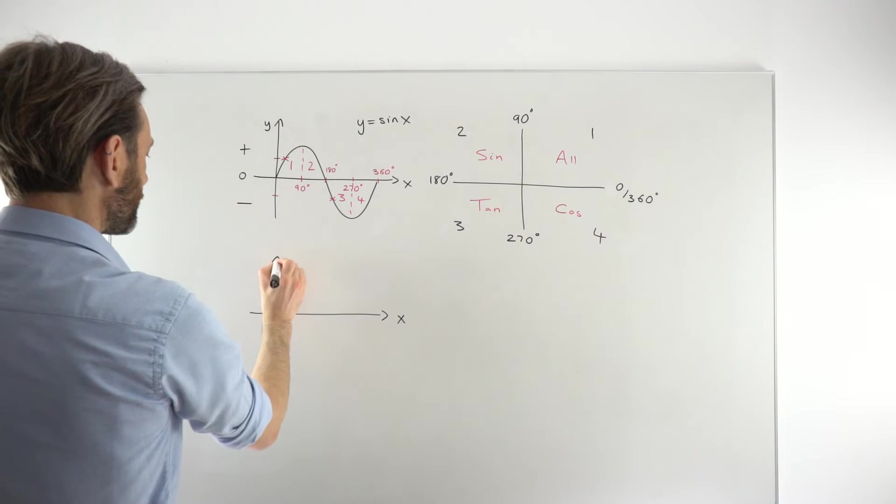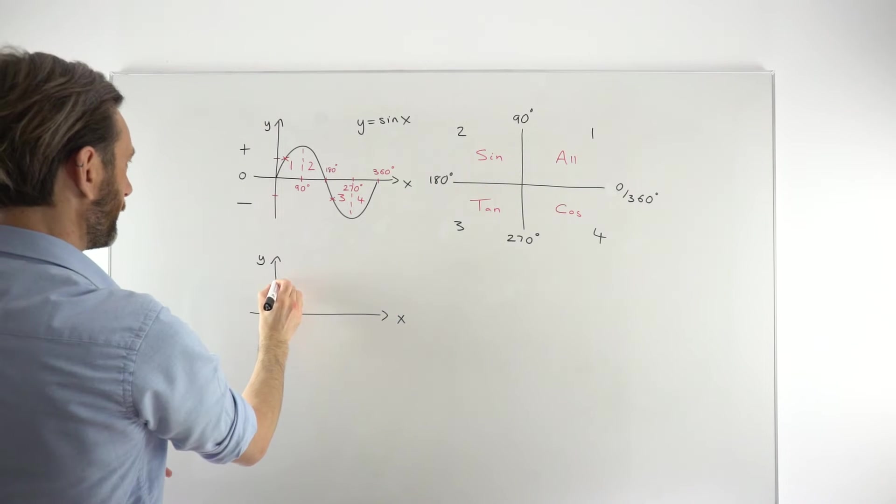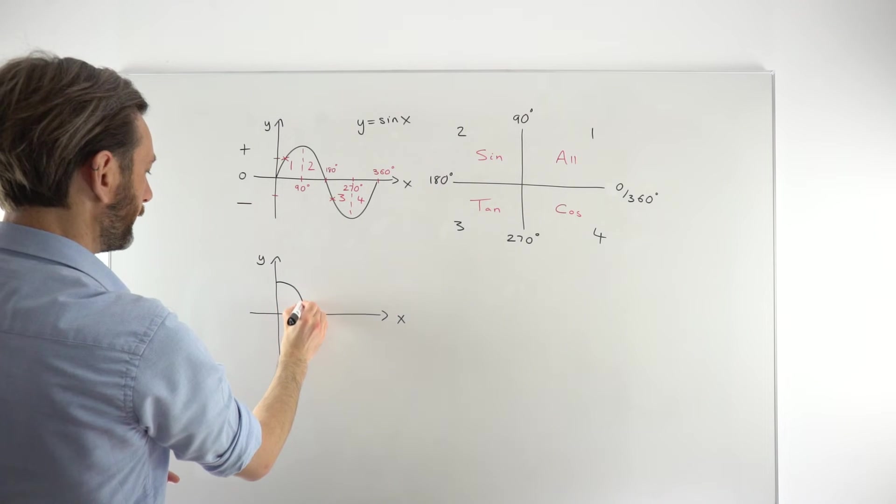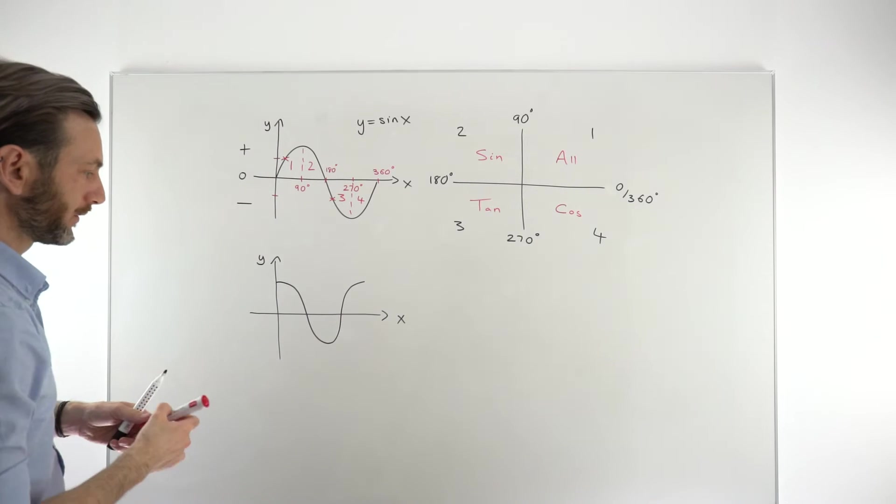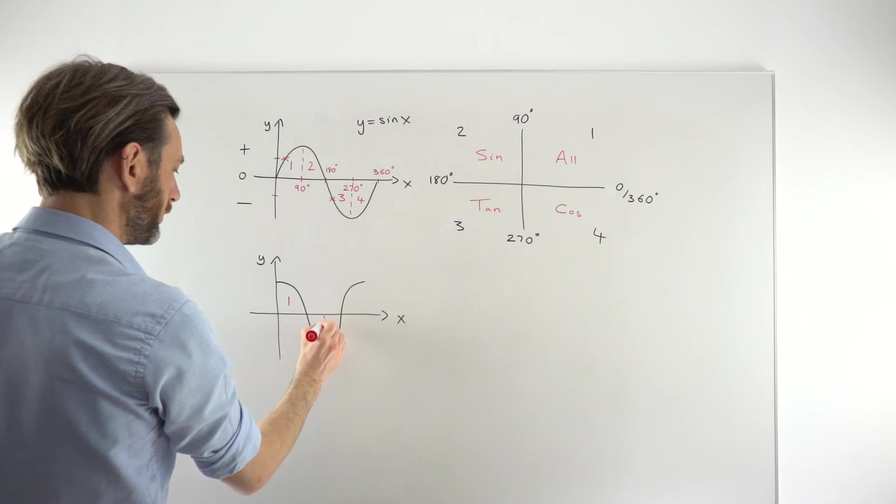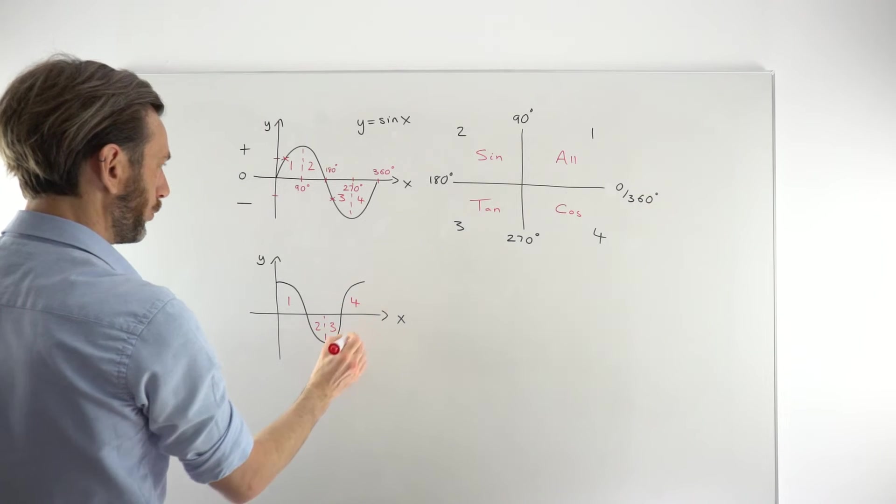I'm just going to draw a cos graph and then check that on the CAST diagram. So the cos graph goes down like this. Just remember, it's just a sine graph moved over a little. So for this one, this is quadrant 1. Quadrants 2 and 3 are in here. And then this is quadrant 4.